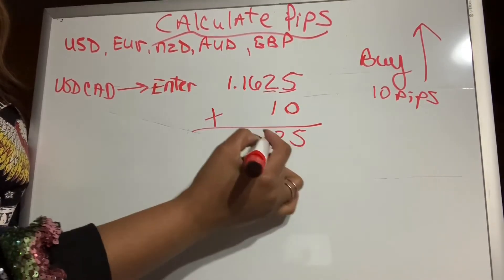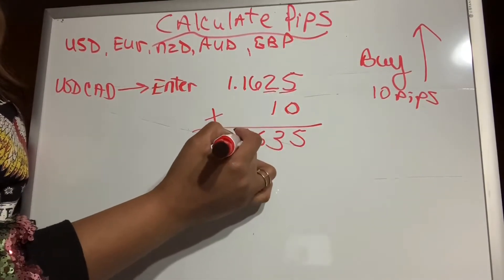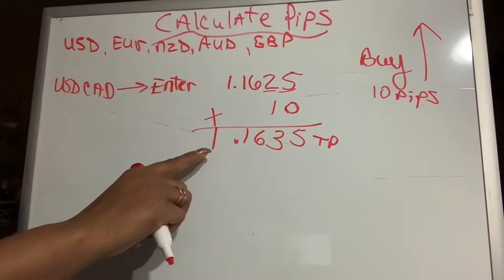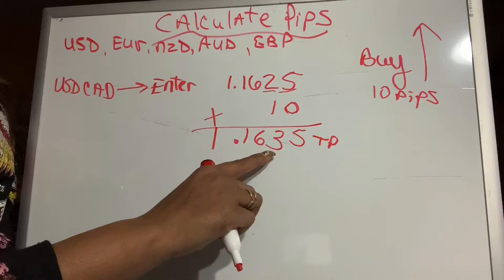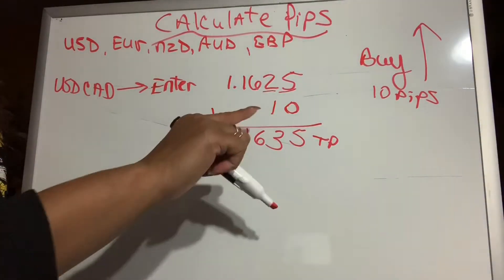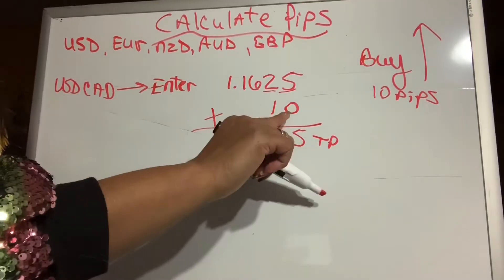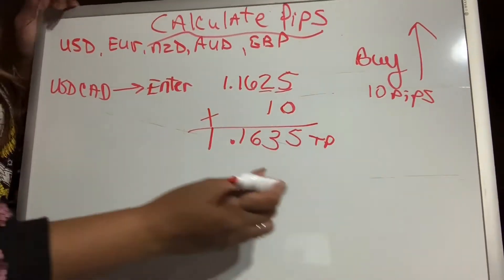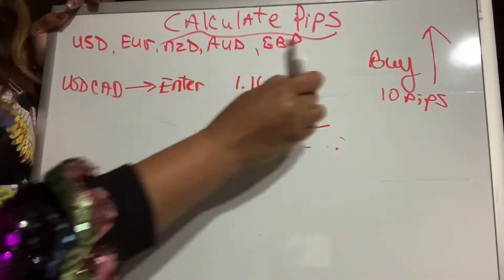You're going to add the 10 to the third and fourth number and bring the numbers down. So this is our TP, our take profit point that we will set in our phone in case we fall asleep. Want to set it and forget it is 1.1635. That means you have made money. If the market went up in a buy, you added 10 PIPs, this is your new take profit point, and the market will close you out when it hits 10.